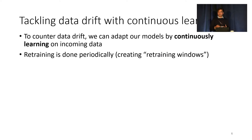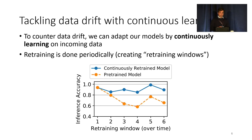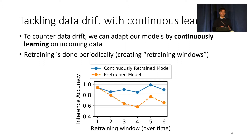Data drift is beyond our control, and we need to develop systems that can handle it. One solution is to adapt the compressed model by continuously retraining it on live incoming data. This is called continuous learning. As you can see in this plot, continuous retraining actually works. The continuously retrained model is able to sustain a higher mean inference accuracy.